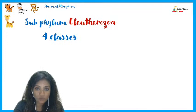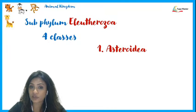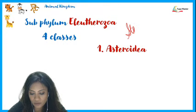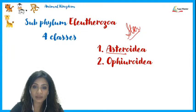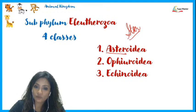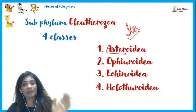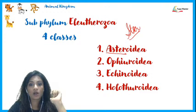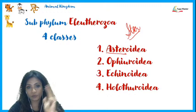The four classes of Eleutherozoa are: first, Asteroidea (aster = star); second, Ophiuroidea; third, Echinoidea; and fourth, Holothuroidea. Remember these four classes by breaking up the words.